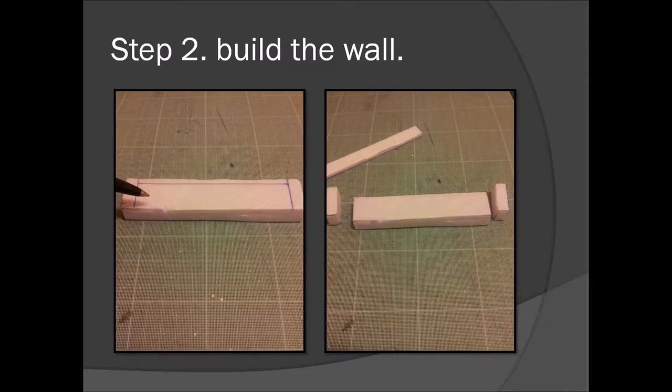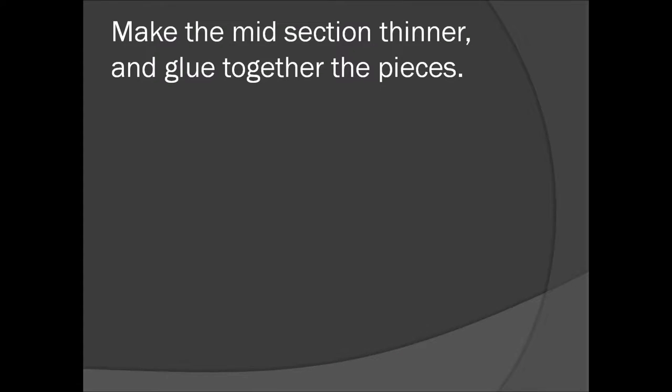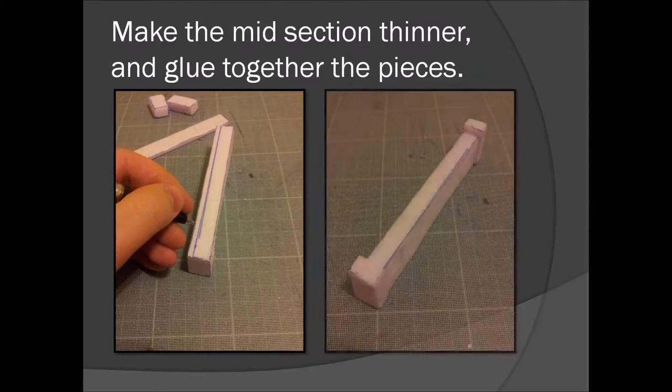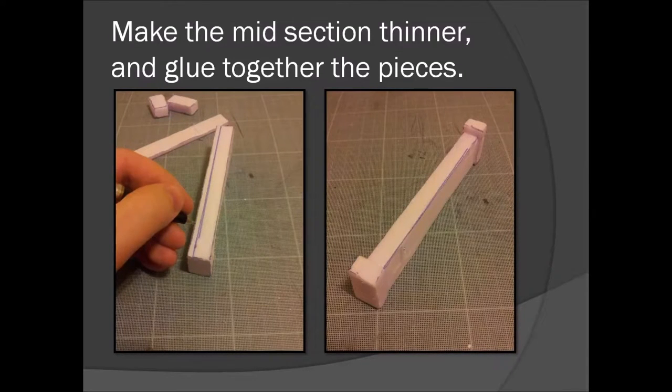And I took away about half a centimeter from the middle part. Make the midsection thinner also, like this. Cut off about half a centimeter from the thickness. And then glue together the pieces. It should look something like this.